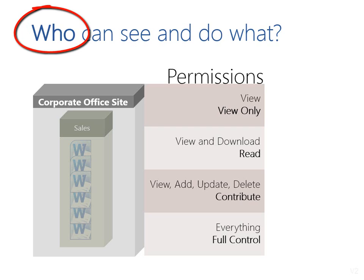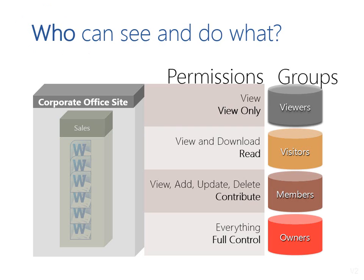Now let us understand the 'who' part. For each SharePoint site there are four groups. Let us say our site is called 'My Company.' The four groups would be called My Company Owners, My Company Members, My Company Readers, and Viewers. Each group has a corresponding permission level.